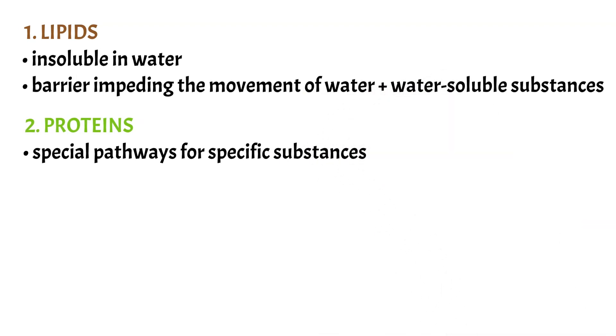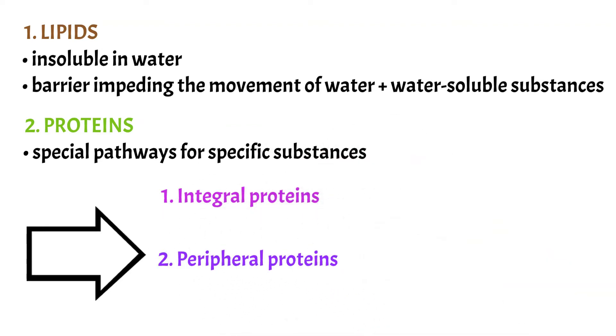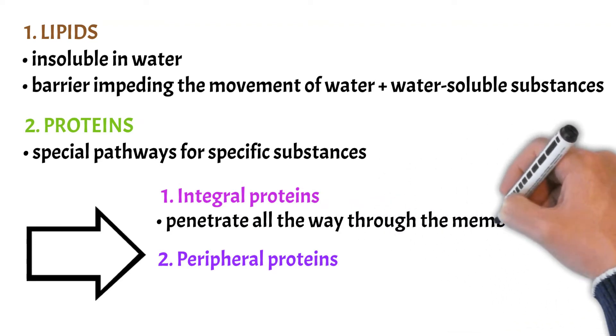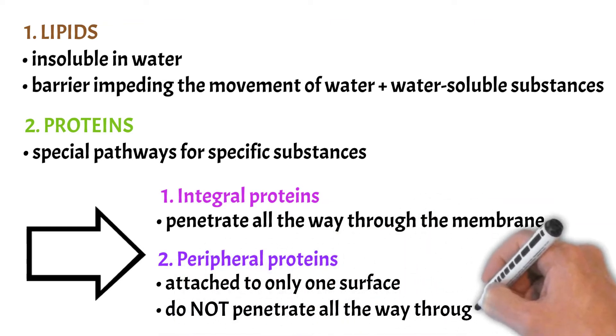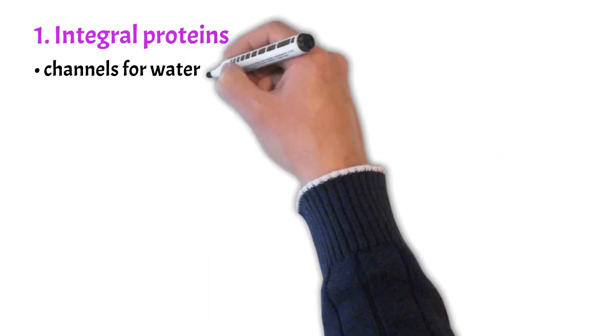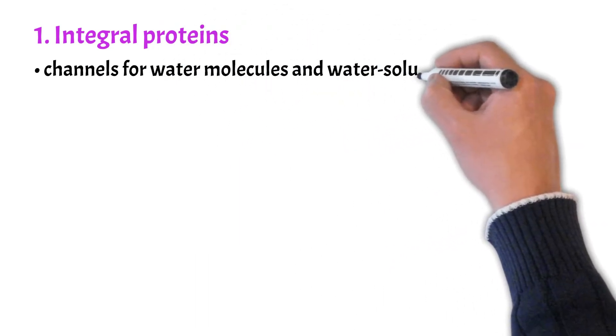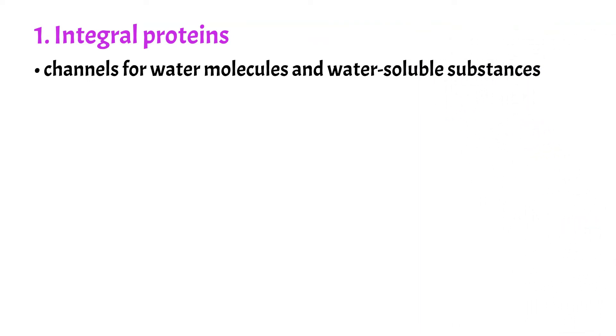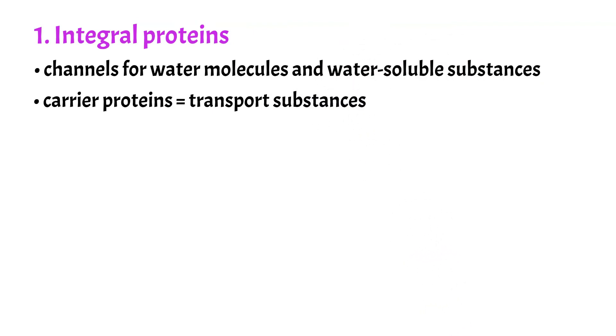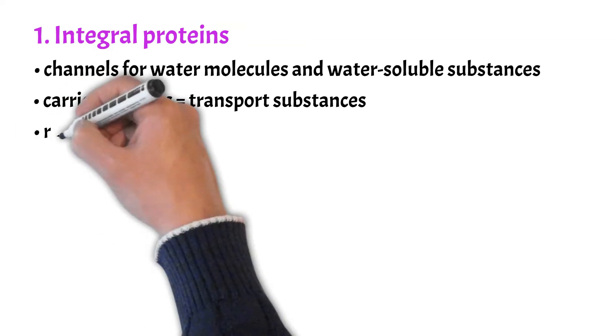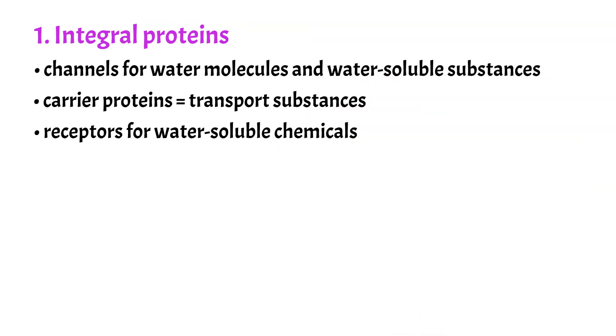These proteins in the membrane are usually glycoproteins and they can be divided into two groups: integral and peripheral proteins. Integral proteins penetrate all the way through the membrane. Peripheral proteins are attached to only one surface of the membrane and they don't penetrate all the way through. The function of many integral proteins is to provide channels, we can also call them pores, for water molecules and water soluble substances that can then diffuse between the extracellular and intracellular fluids. They can also be used as carrier proteins that transport substances that otherwise wouldn't be able to penetrate the lipid bilayer, or serve as receptors for water soluble chemicals.